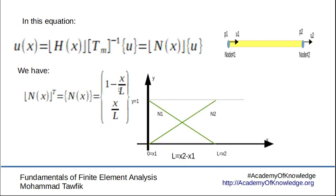Plotting these two trial functions, we will find that the first function N1 will start with a value of 1 at x equals 0 and end with a value of 0 at x equals L.